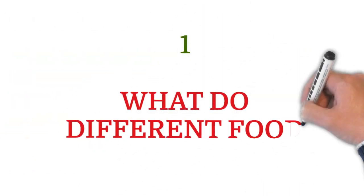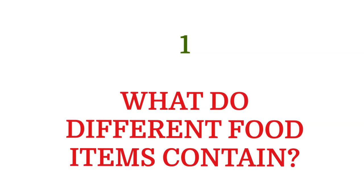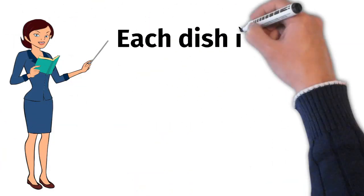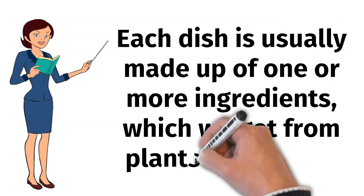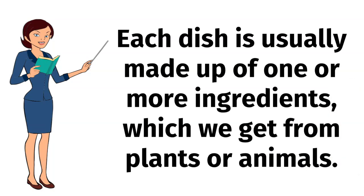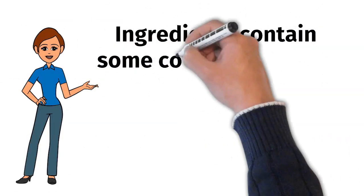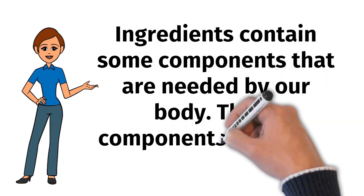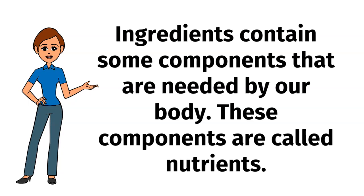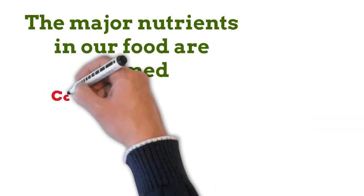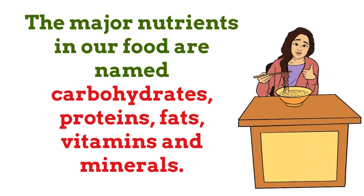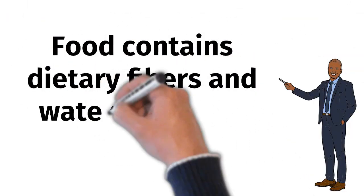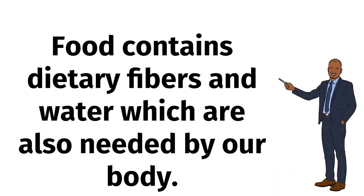First, let's discuss what do different food items contain. As we know, each dish is usually made up of one or more ingredients which we get from plants or animals. Ingredients contain some components that are needed by our body. These components are called nutrients. The major nutrients in our food are carbohydrates, proteins, fats, vitamins, and minerals. Food also contains dietary fibers and water, which are also needed by our body.